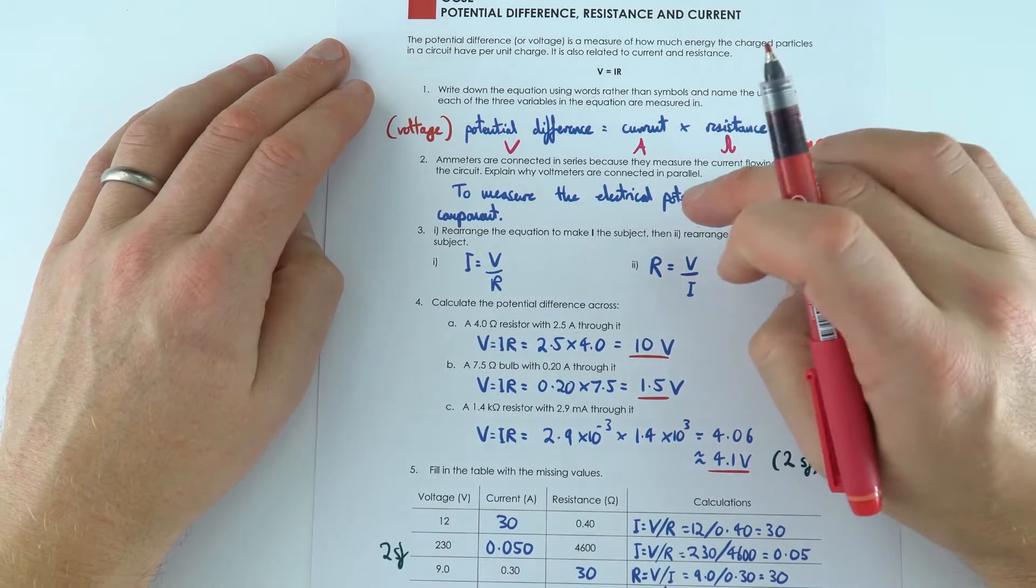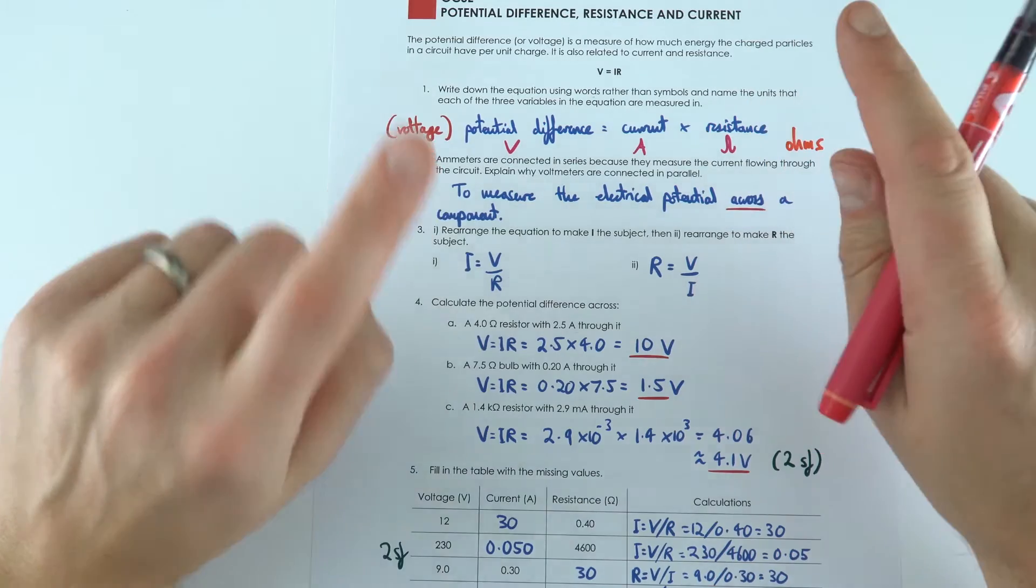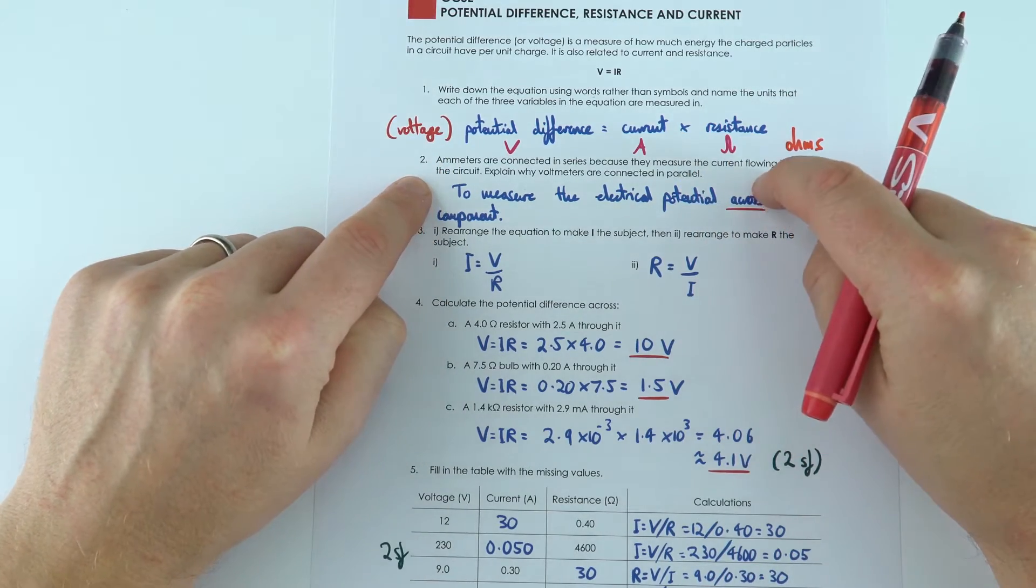And again, just reiterating that ammeters always go in series and voltmeters go in parallel because they look at the difference in the electrical potential between the start and the end of that component.